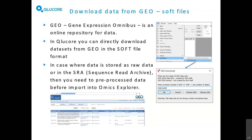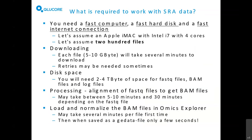So a lot of what this webinar covers relates to things other than Omics Explorer itself — rather how to work with the data in order to prepare it. If we look at what is required to work with this type of data, you normally need a fast computer, a fast hard disk, and a fast internet connection.